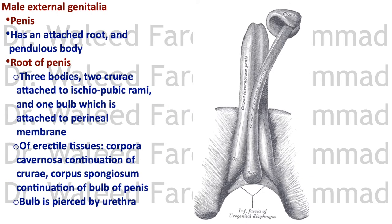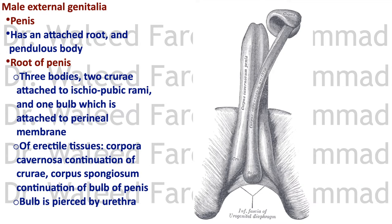The male external genitalia are the penis, which has an attachment with a root and a pendulous body. The root of the penis consists of three bodies: the two crura and one bulb. The crura are on the sides attached to the ischiopubic rami, and the bulb is in the middle attached to the perineal membrane. They are made of erectile tissue. The two crura extend to form the corpora cavernosa, and the bulb extends to form the corpus spongiosum.